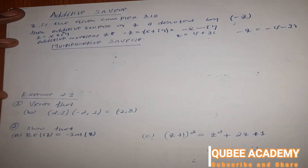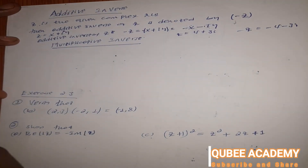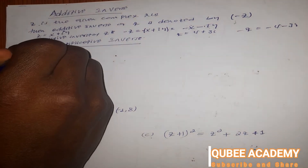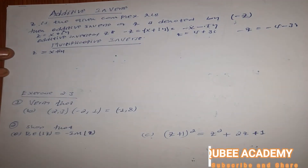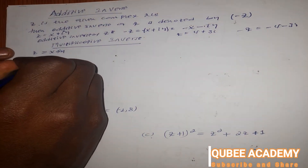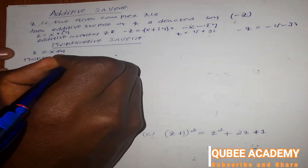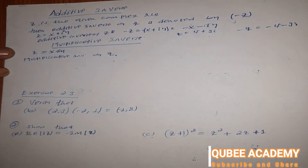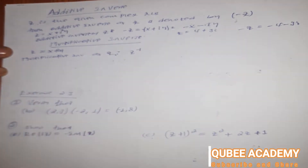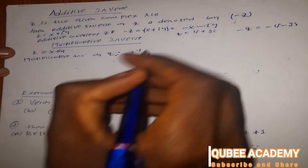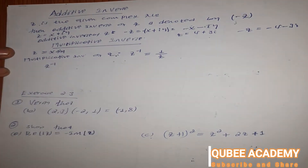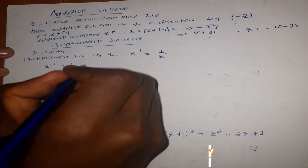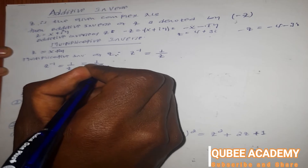Now the multiplicative inverse. Let's say z is a complex number. Then the multiplicative inverse of z is equal to one over z, which is equal to one over x plus i times y.